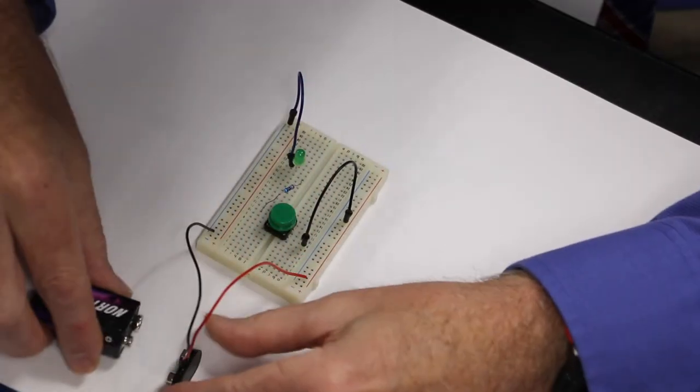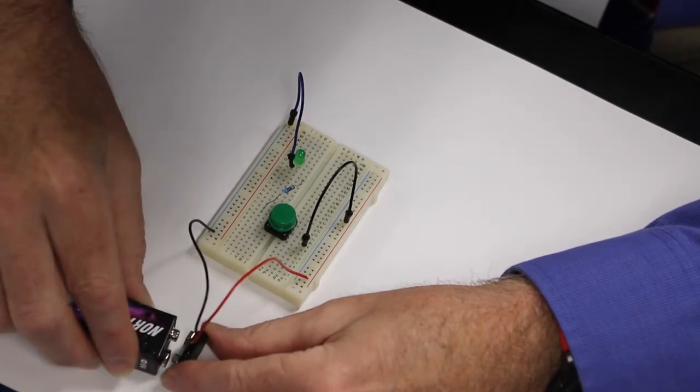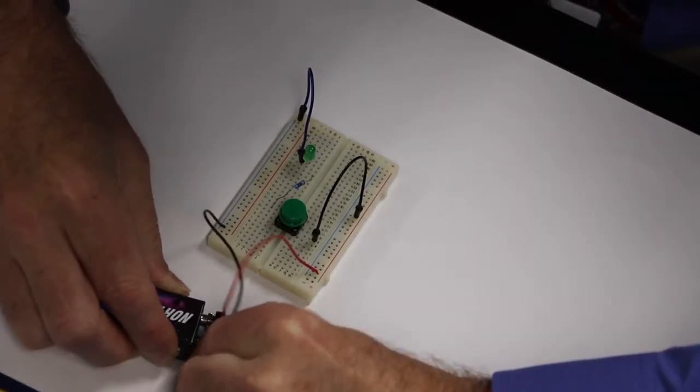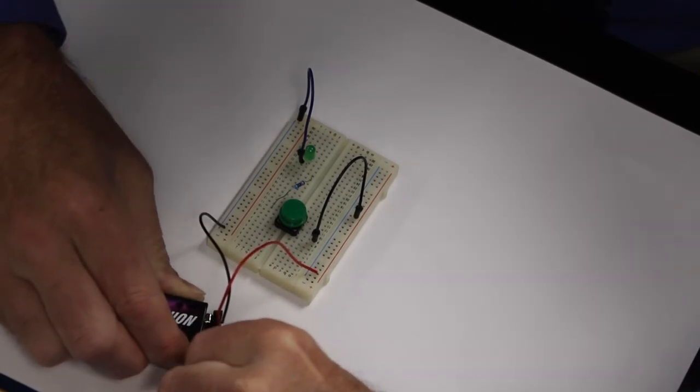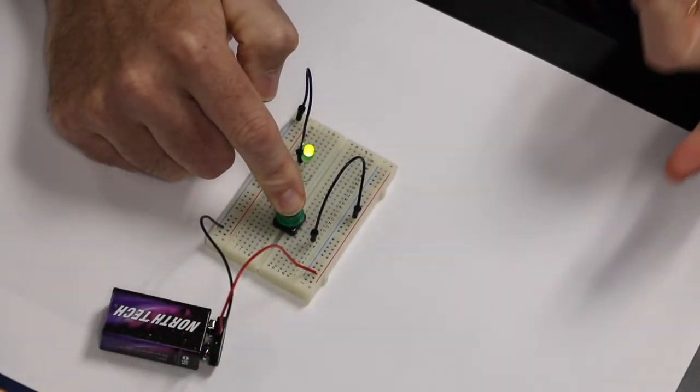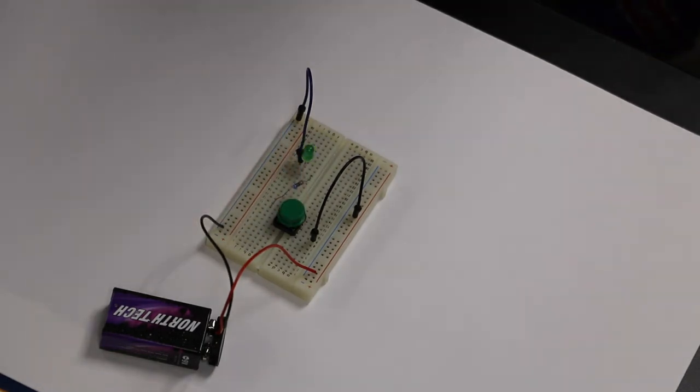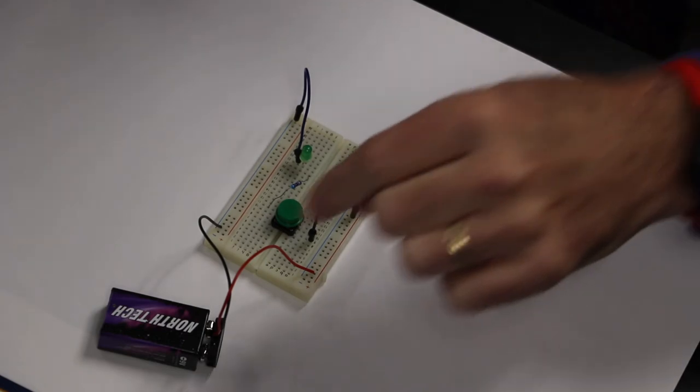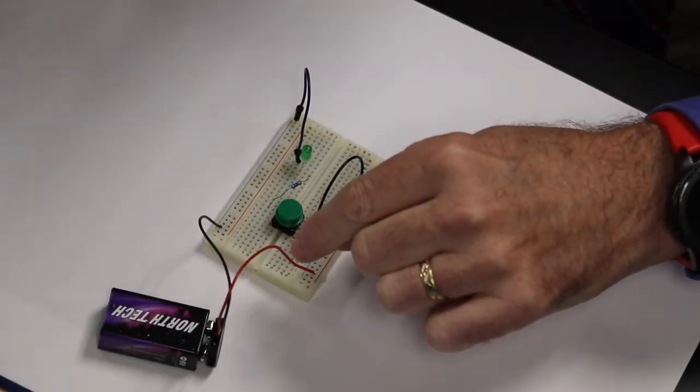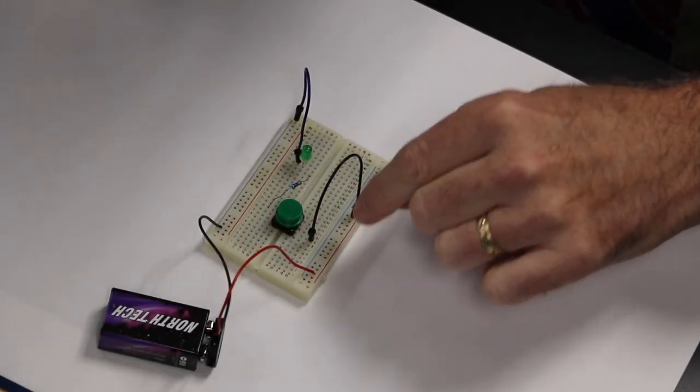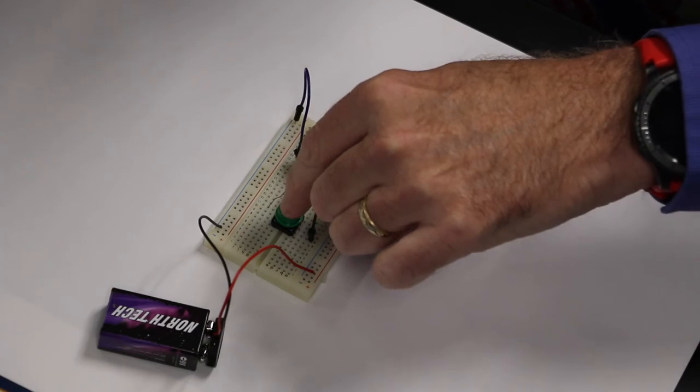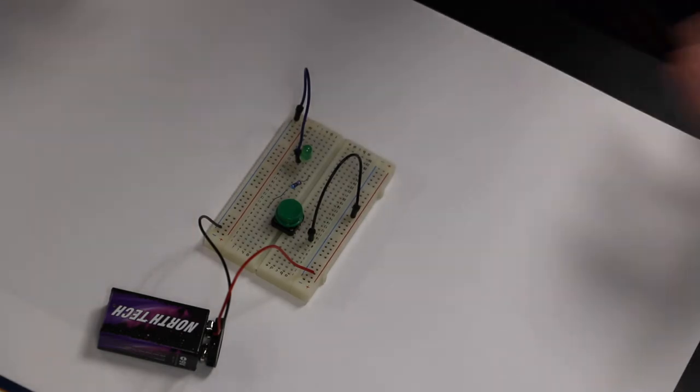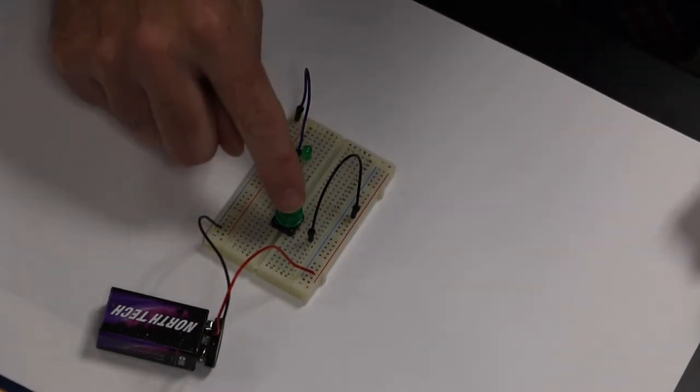So we hook up the battery. And then if I press the button, we get the green light. So as long as I press the battery, we're good to go. You can see how we have the full path. We go from the battery positive to this side of the switch, to the resistor, to the LED back to the battery. So that is phase two.